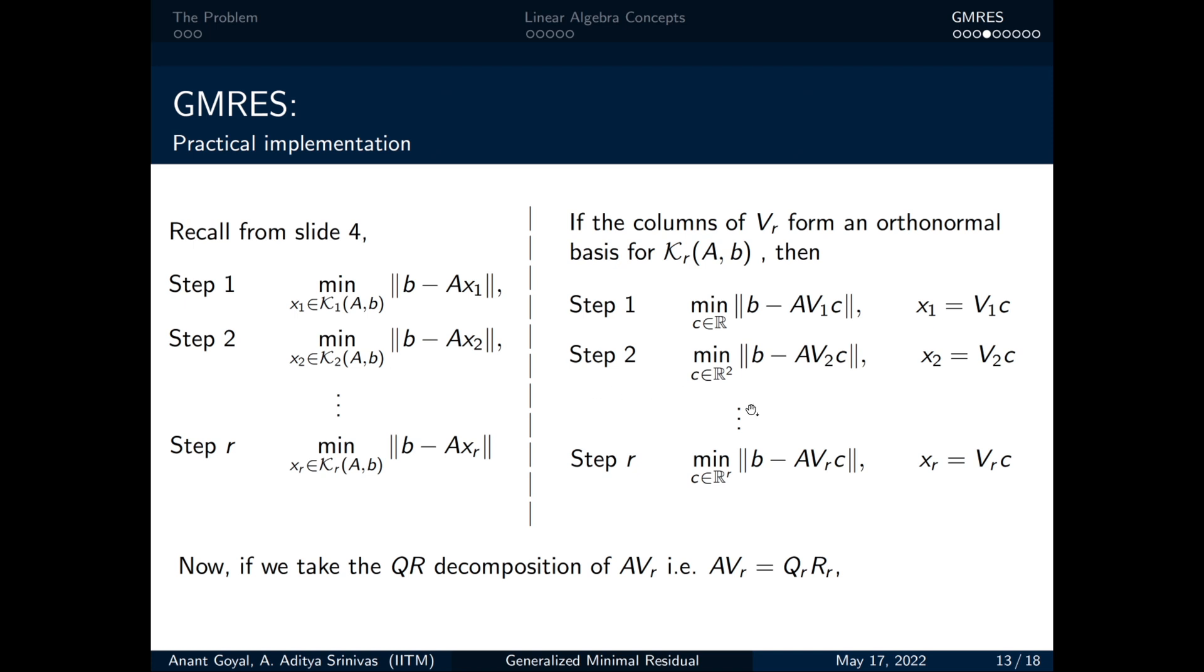It minimizes the norm of residual taken iteratively over the Krylov subspace with dimension increasing by 1 every step. On the right hand side, with the help of Arnoldi's orthogonal V matrix, we write X as the linear combination of the columns of V. Therefore, from the left to right, we shifted our unknowns from X to C.